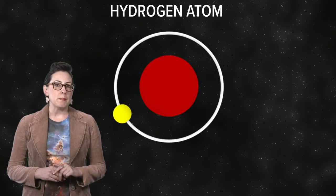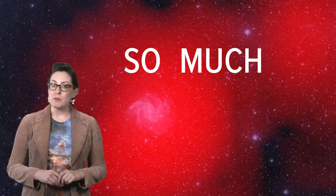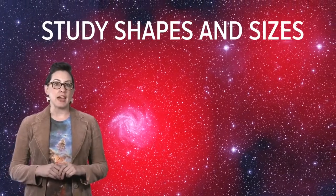Sometimes hydrogen emits a specific frequency of radio light. It isn't very bright, but because there is so much hydrogen, astronomers can use this glow to study the shapes and sizes of galaxies.